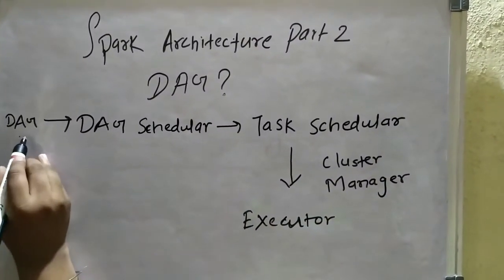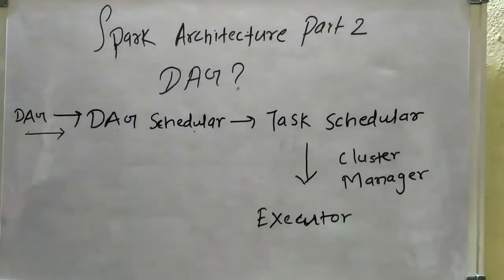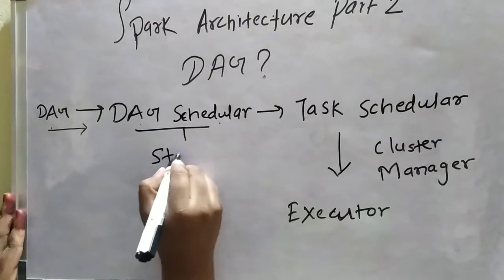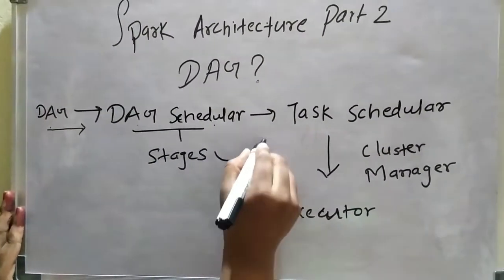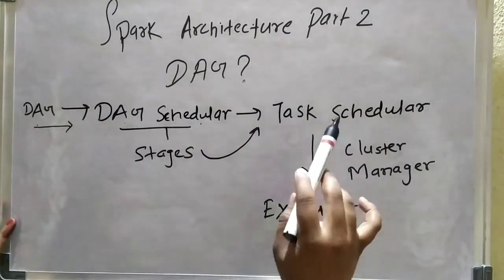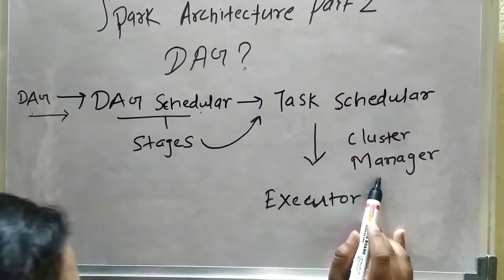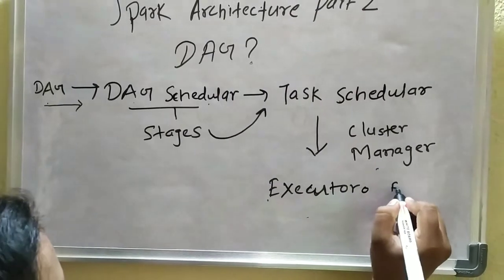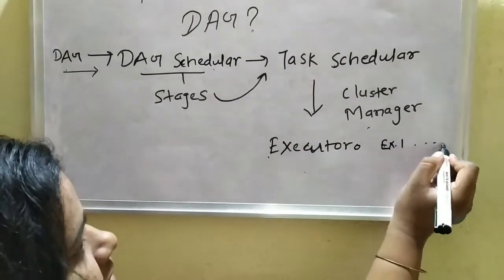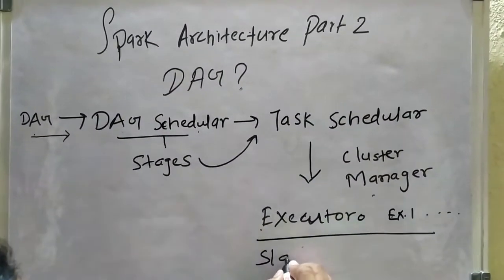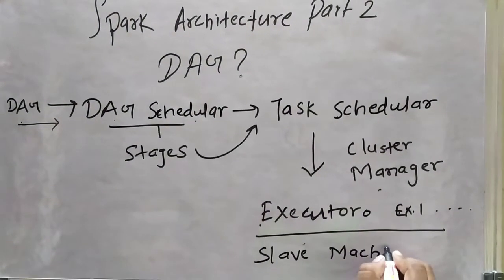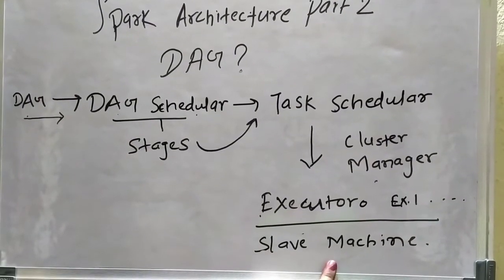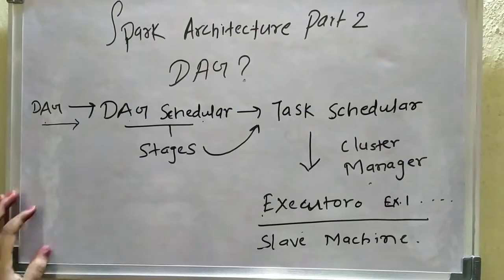The DAG provides the graph as input to the DAG scheduler, where there are different stages — for example, first stage is importing, next is the filter operation. The DAG scheduler provides input to the task scheduler, which is located along with the cluster managers. Next comes the executor — the task scheduler contains multiple executors, and executors are known as slave machines.